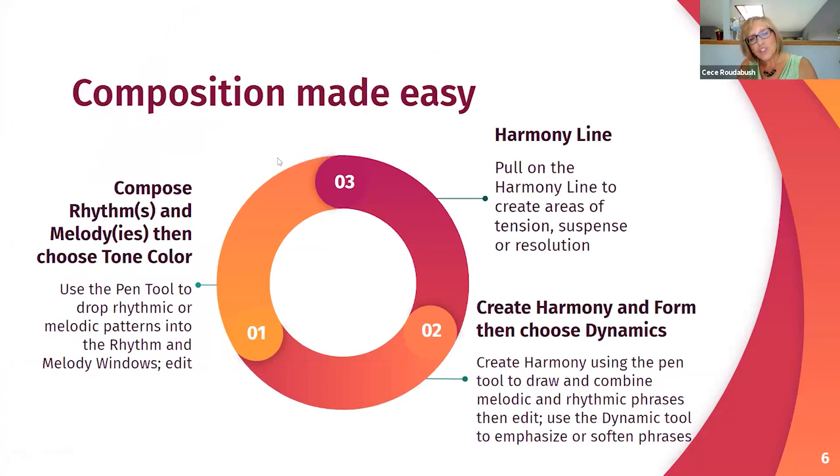We make composition in three easy steps. You start by composing your rhythms and melodies, then you edit those, and then you create harmony and form and choose dynamics. They have this really exciting feature called the harmony line. When you see color, it's doing something to the music. It creates tension, suspense, and resolution.